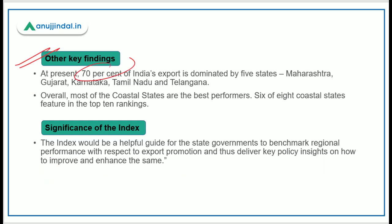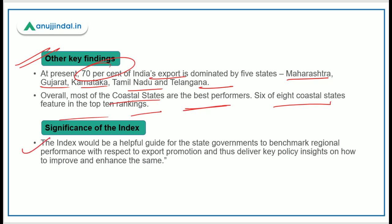As per this report, 70 percent of India's exports are dominated by five states: Maharashtra, Gujarat, Karnataka, Tamil Nadu, and Telangana. These are coastal states. Overall, coastal states are the best performers — six of the eight coastal states feature in the top ten rankings of this index. This index would be a helpful guide for state governments to benchmark regional performance with respect to export promotion.